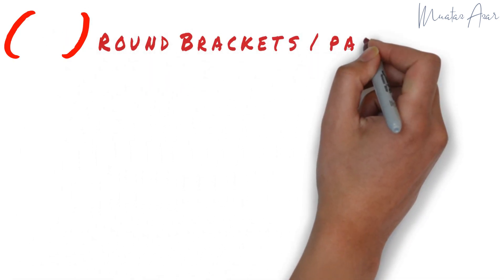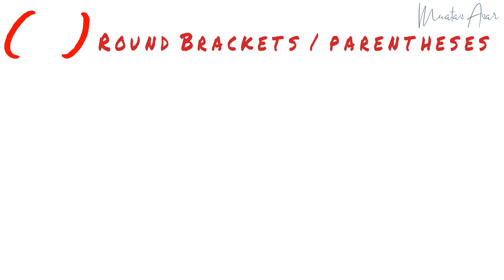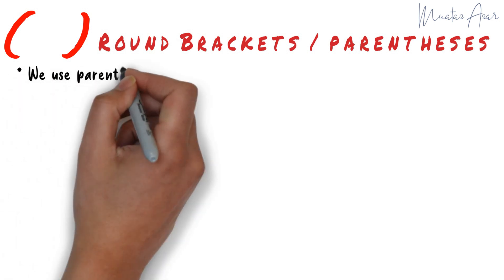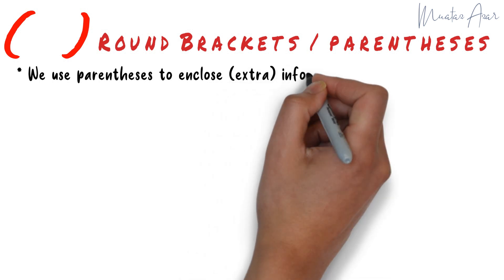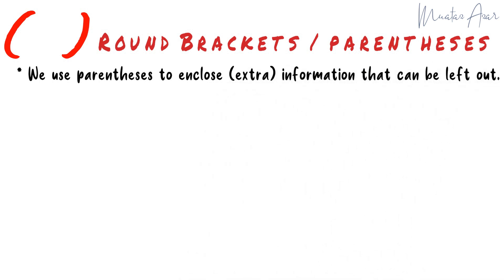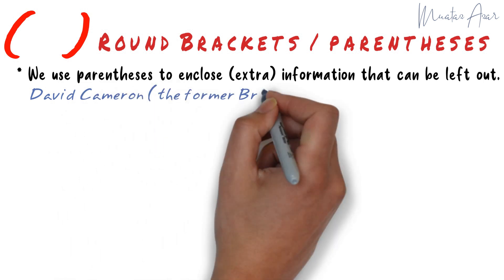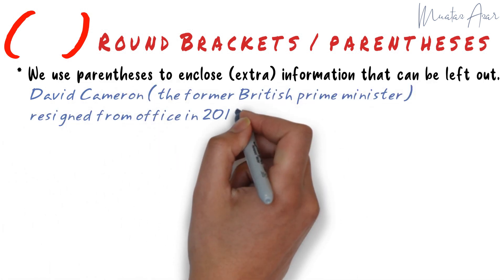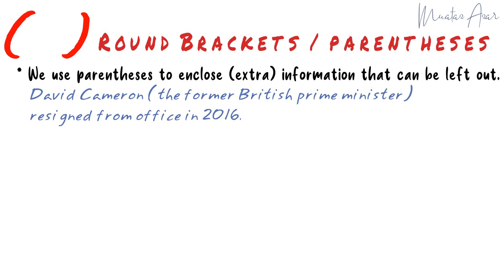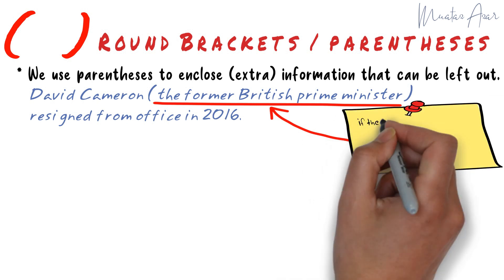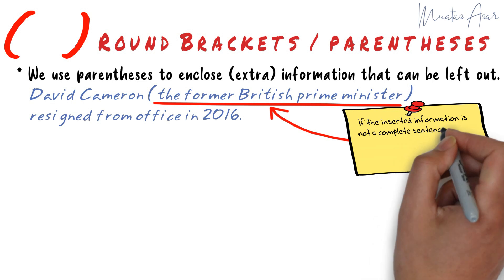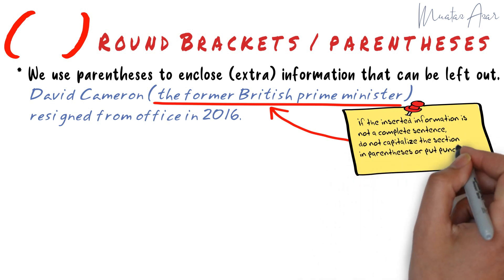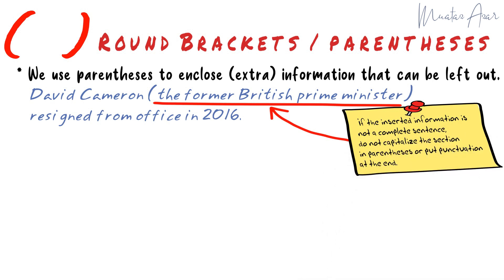Round brackets or parentheses. We use parentheses to enclose extra information that can be left out. For example: "David Cameron (the former British Prime Minister) resigned from office in 2016." Note that if the inserted information is not a complete sentence, do not capitalize the first letter of the section between the brackets, and don't put punctuation at the end.